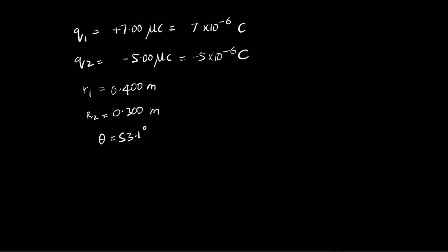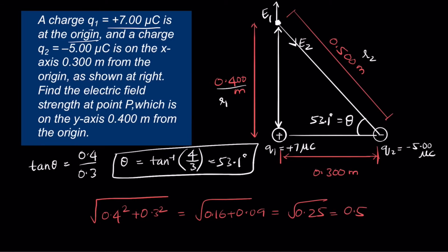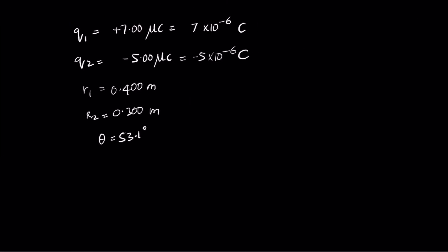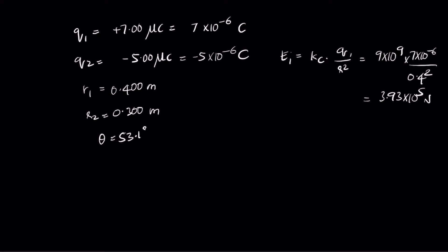Now let's calculate the individual values of E1 and E2. E1 = kc·q1 / r1² = (9×10⁹ × 7×10⁻⁶) / (0.4²), which gives 3.93×10⁵ N/C.